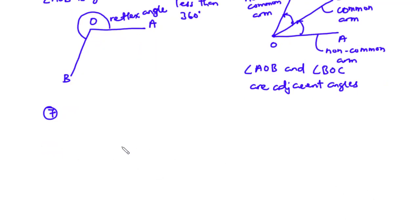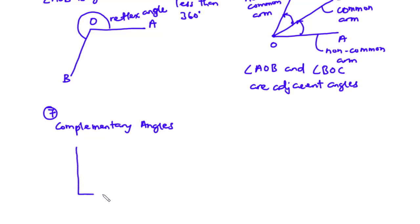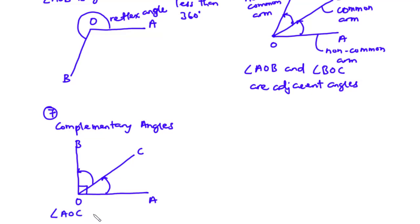Complementary angles are two angles that add up to 90 degrees. Considering the right angle with measure 90 degrees, assuming we have lines OA, OB, and OC, two angles are formed and they sum up to 90 degrees. So we say that angles AOC and BOC are complementary angles.